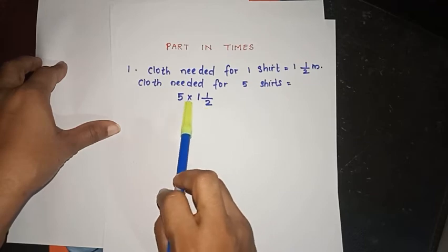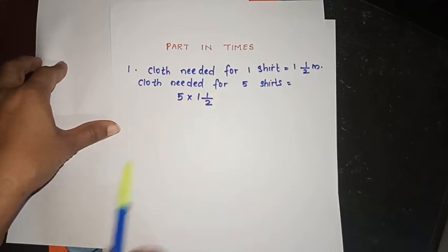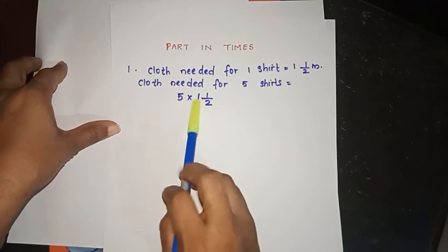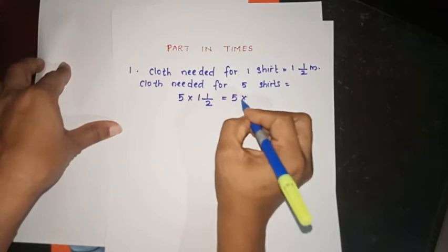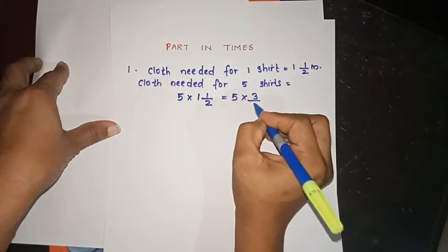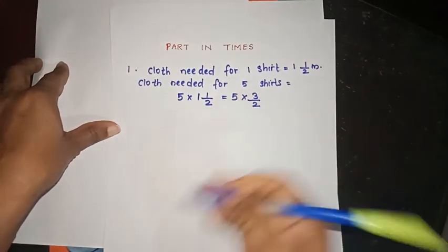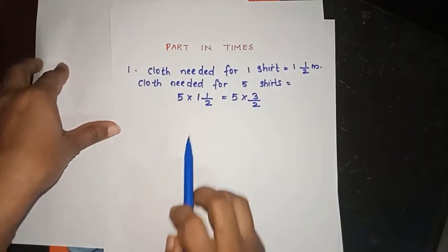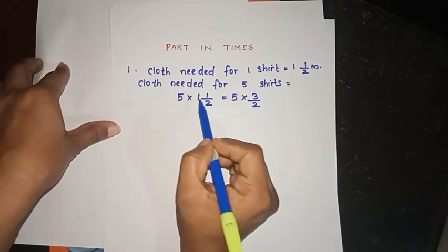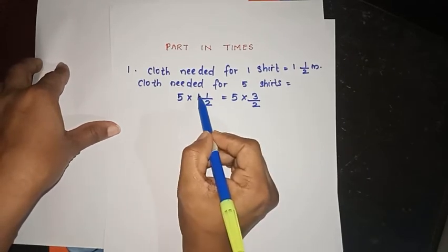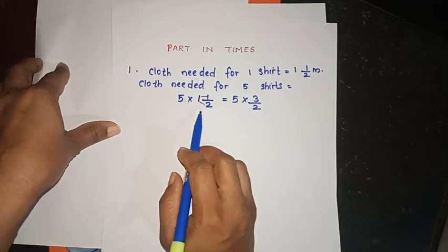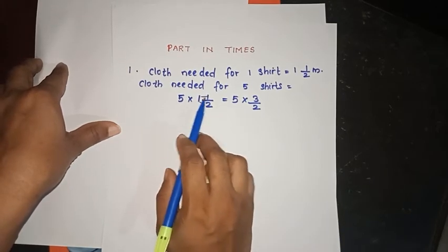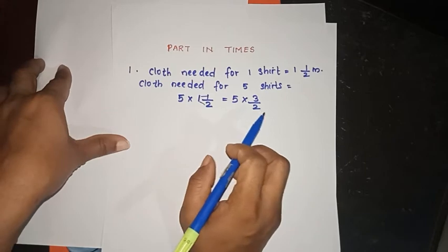2 into 1 is 2, plus 1 is 3. So this is equal to 5 into 3 by 2. That gives us 3 by 2.